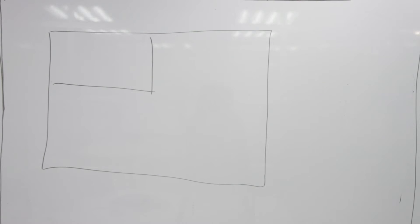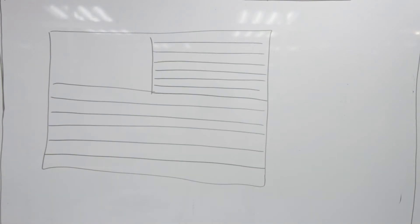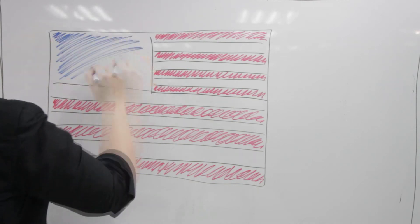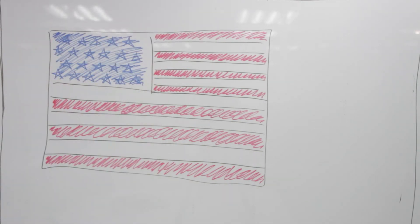It's the American flag. It consists of red and white stripes, as you can see. And in the corner, there's a blue square with white stars. That's the American flag.